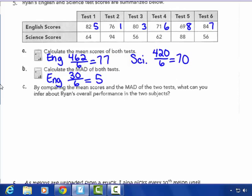In science, the mean is 70. So 64 is 6 away. 94 is 24 away. 56 is 14 away. 62 is 8 away. 88 is 18 away from 70. And 56 is 14 away from 70. So when I add up for science, the deviations from the mean, how distant are they? 6 plus 24 plus 14 plus 8 plus 18 plus 14. I get 84 divided by 6, which gives me a MAD of 14. So the science tests are more spread out. Their MAD is larger.